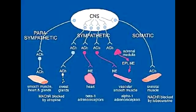Where are the dopamine receptors located in the sympathetic nervous system? Dopamine receptors are located in the renal vasculature and smooth muscles. The preganglionic neuron releases acetylcholine, which activates the nicotinic receptors at the postganglionic neuron, and that postganglionic neuron causes the release of dopamine to activate the dopamine receptors.